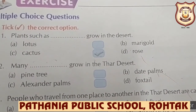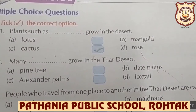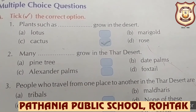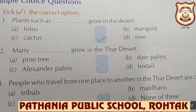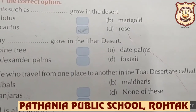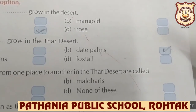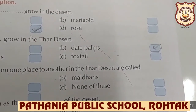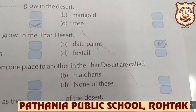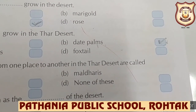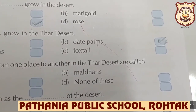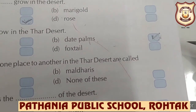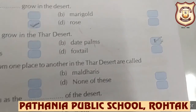Number two: many dash grow in the Thar desert — pine trees or date palms? Yes, date palms. Put a tick on date palms. These trees can grow and thrive in the hard, dry heat of the desert. That is the reason — put a tick on date palms.